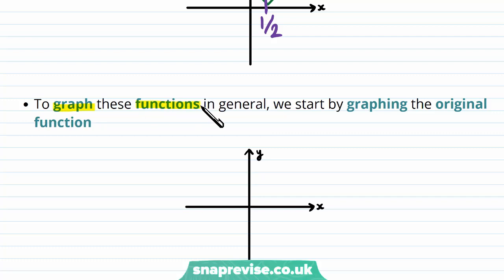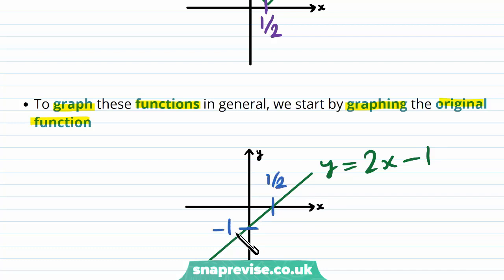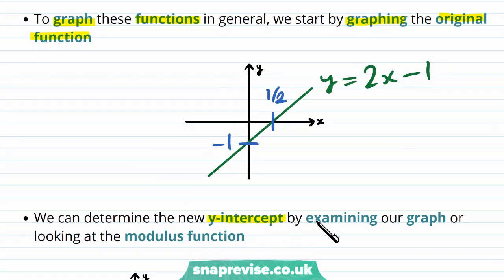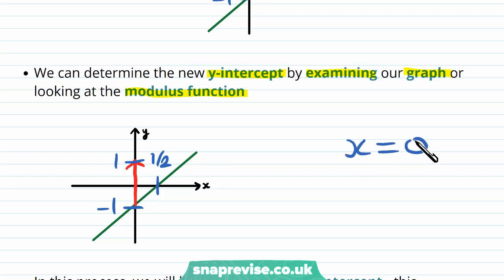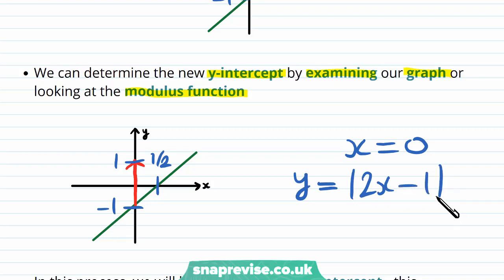To graph these functions in general we start by graphing the original function. So in this case we're looking at the graph of y equals 2x minus 1. For this graph we have an x-intercept at one half and a y-intercept at minus 1. We can determine the new y-intercept by examining our graph or by looking at the modulus function. We can find the new y-intercept by taking the y-intercept at minus 1 and reflecting it up to 1. Alternatively, we can look straight at the modulus function — we're looking at the point when x equals 0, which is the definition of the y-intercept. We're looking at y equals the modulus of 2x minus 1, so when x is 0 we have the modulus of minus 1.